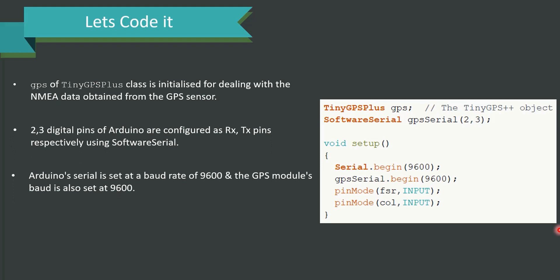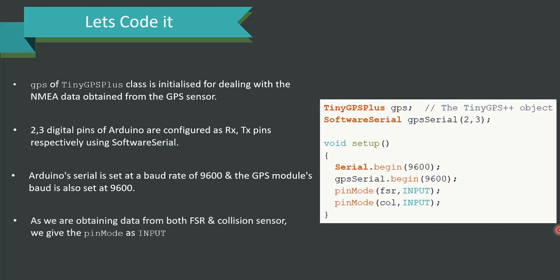Details about SoftwareSerial were covered in the previous modules — please refer to them if you have any questions. The Arduino serial is set at a baud rate of 9600 and the GPS module's baud rate is also fixed at 9600. Since we are obtaining data from both FSR and collision sensor, pin mode is set as input for both, as shown in the code snippet.